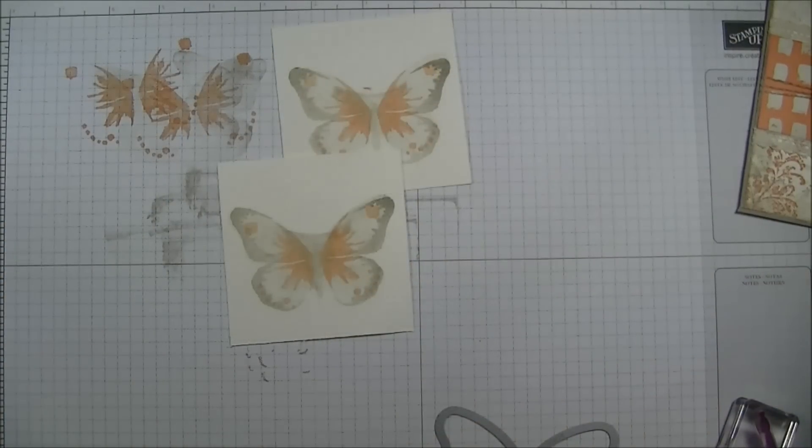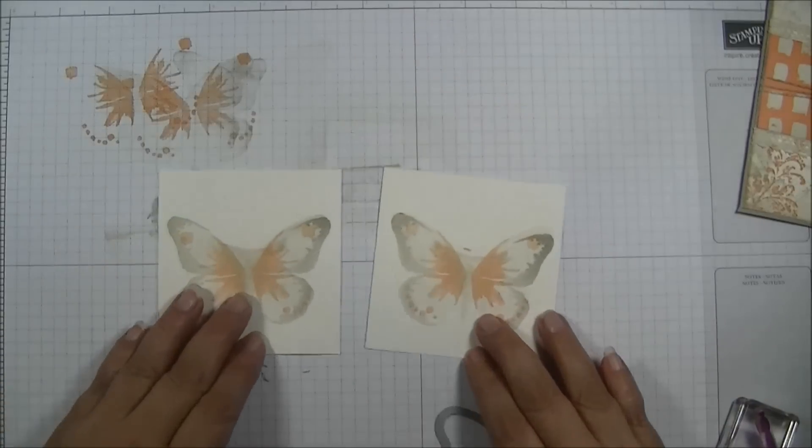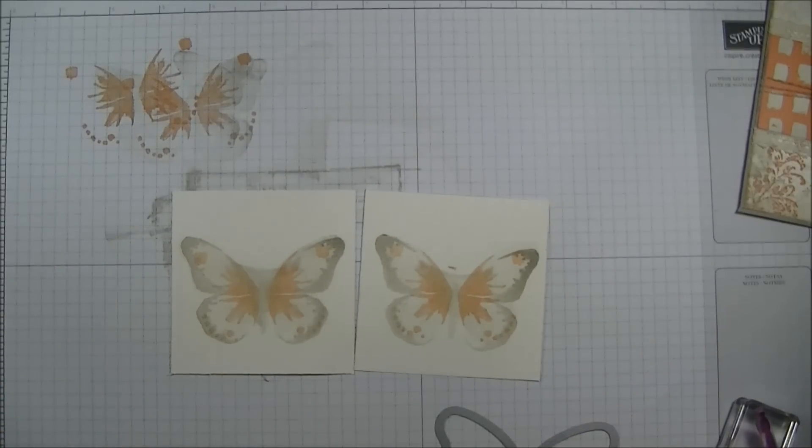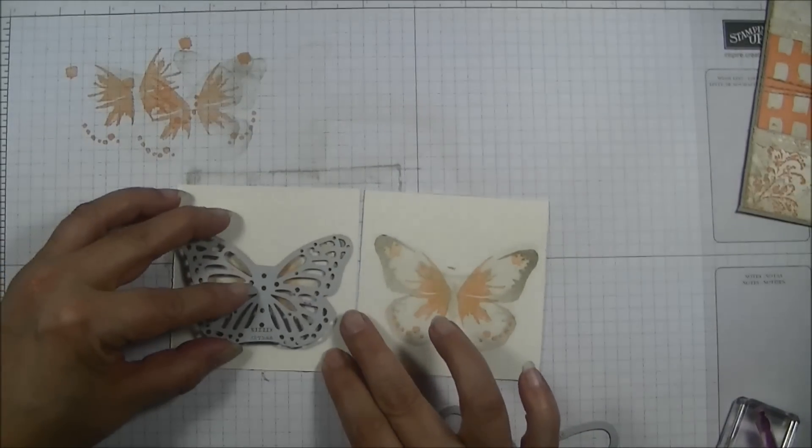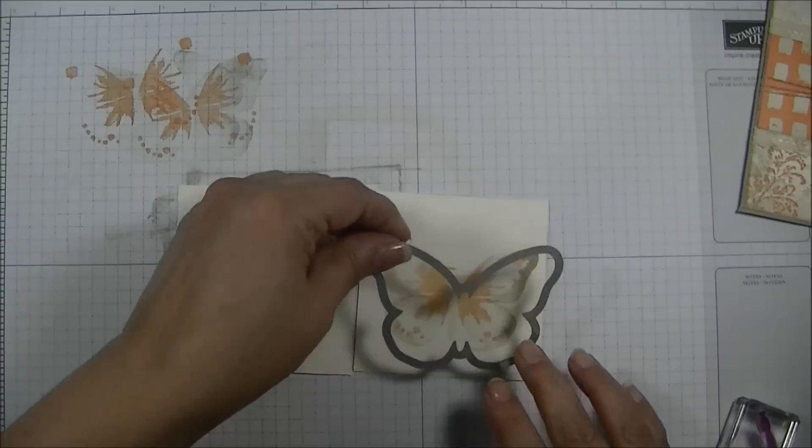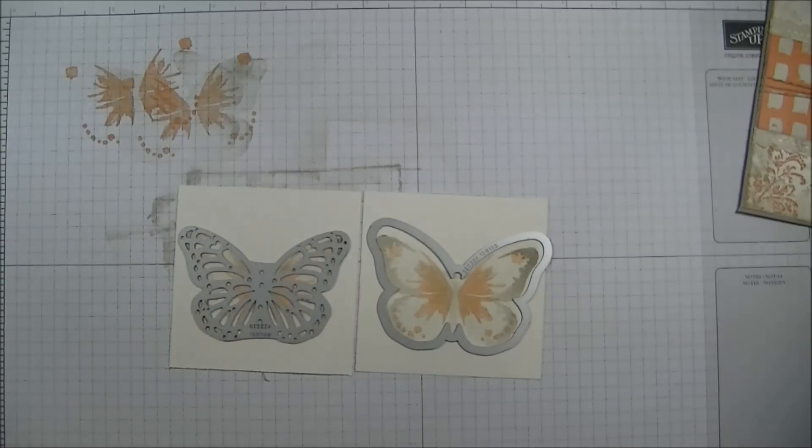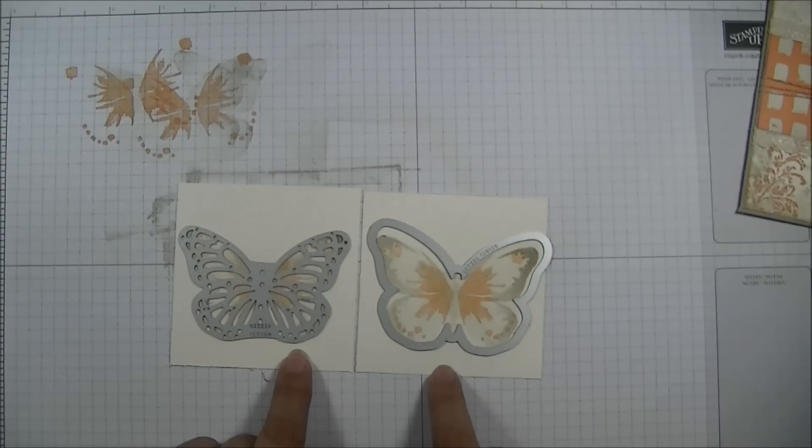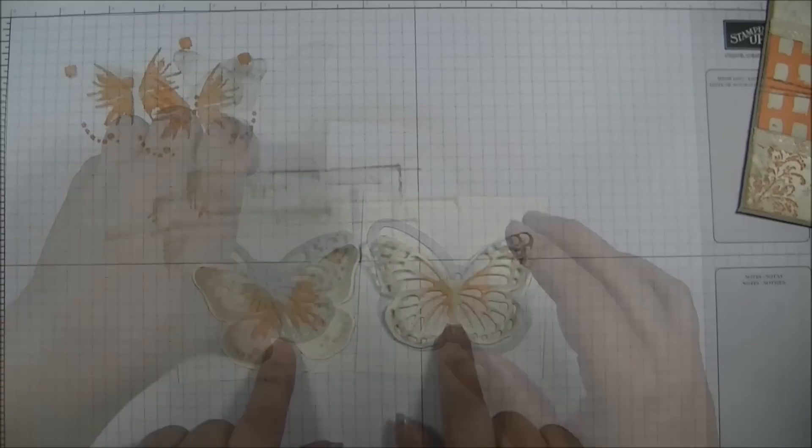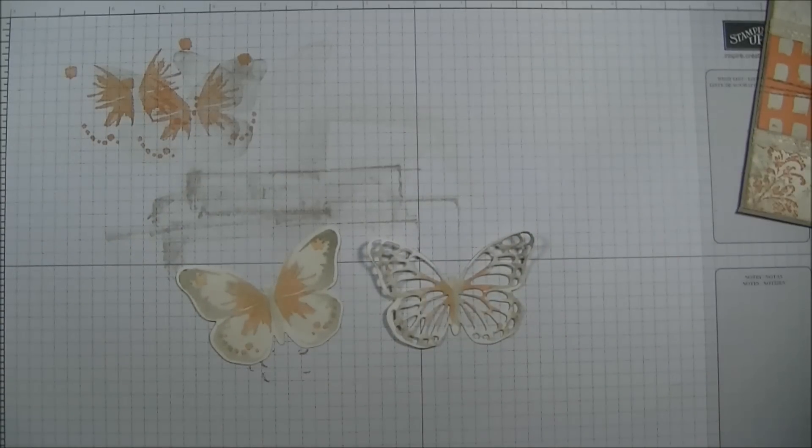So our butterflies are stamped. And the next thing I am going to run these through my Big Shot. I will be cutting one out using this die and the other using this die. I am going to run them through the Big Shot and be right back. There are our butterfly pieces after they have been cut out.